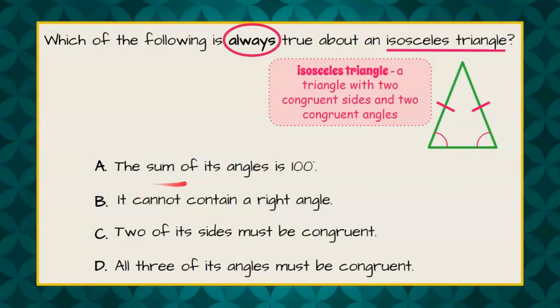Choice A. The sum of its angles is 100 degrees. Well, we know that that is not true about a triangle. The three interior angles of a triangle have a sum of 180 degrees.